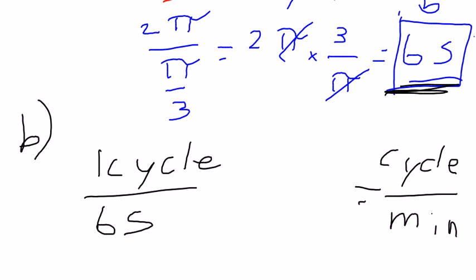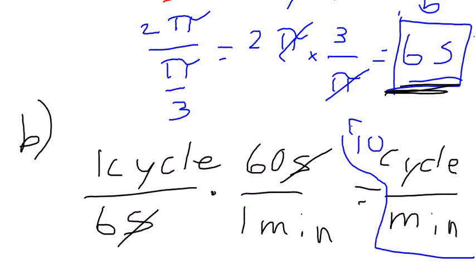Alright, so this is just a simple conversion. We've got to figure out how many seconds in a minute. So multiply by 60 seconds over 1 minute. The seconds will cancel. You're left with 1 cycle times 60 divided by 6 equals 1 minute. So our answer then would be 10 cycles per minute.